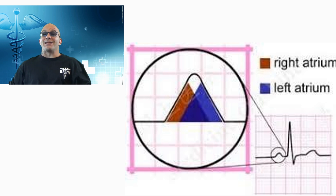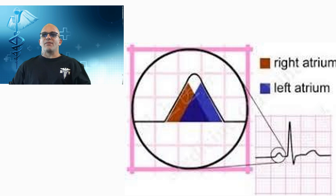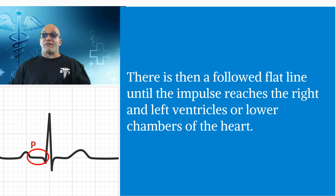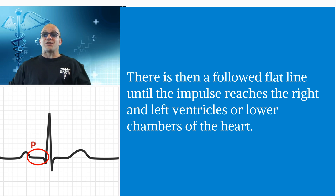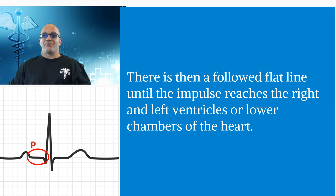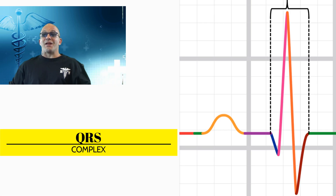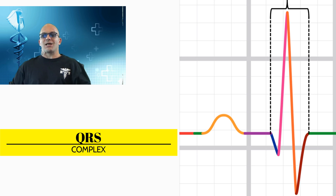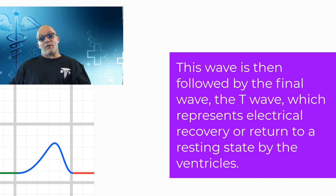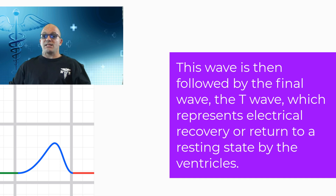A normal heartbeat measured on an EKG shows the timing of the contraction of the upper atrium and lower ventricles. The right and left atria, or upper chambers of the heart, make up the first wave, which is called the P wave. There is then a flat line until the impulse reaches the right and left ventricles, or lower chambers of the heart. Once the impulse reaches this location, the next wave is formed, which is known as the QRS complex. This wave is then followed by the final wave, the T wave.